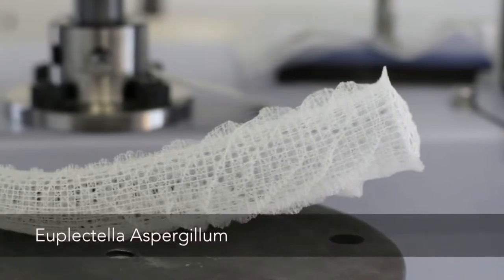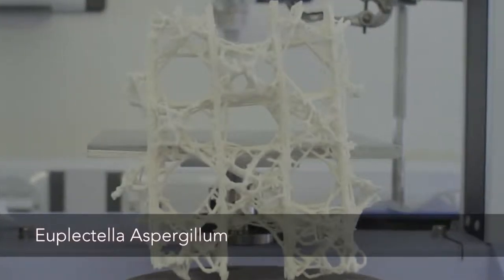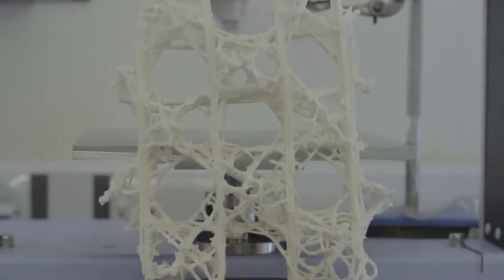Euplectella aspergillum is a unique biological system. It's a silica sea sponge based in the ocean and it has a unique damage-tolerant hierarchical structure.